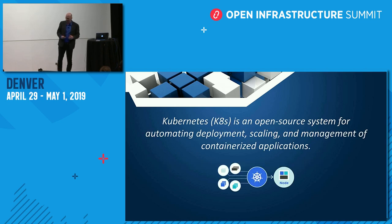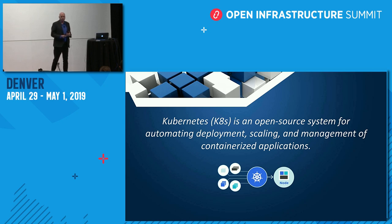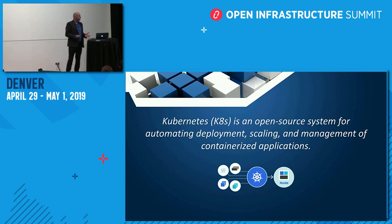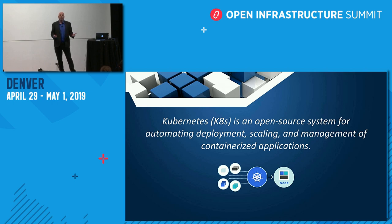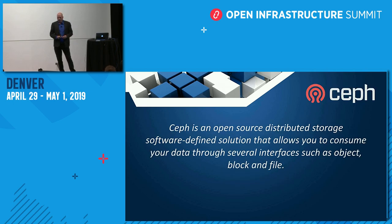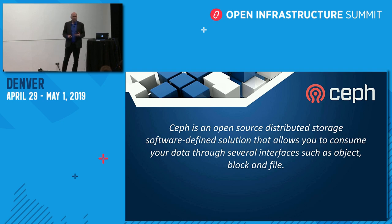Kubernetes, for those of you who are new to it, is an open source system automating deployment, scaling, and management of container applications. It has an abstraction layer that can run in any environment — it's not tied to a specific environment. Ceph, for those new to it, is also open source but it's a distributed, software-defined storage system.